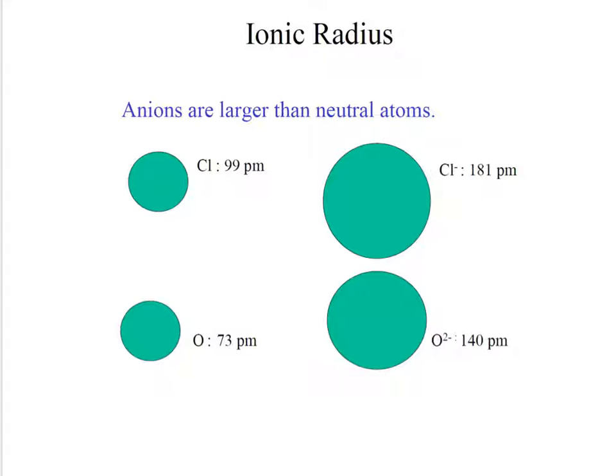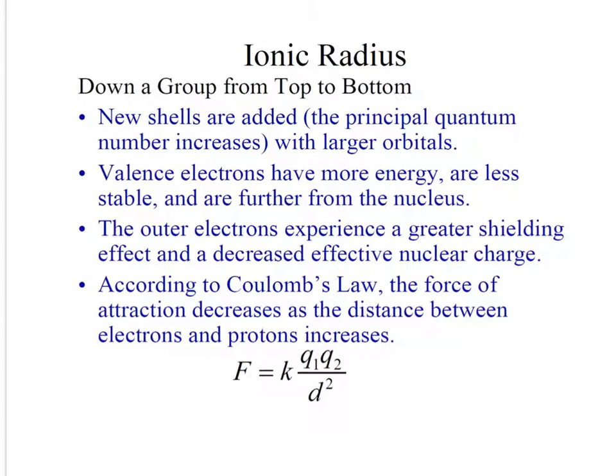When an atom gains electrons, the number of electrons repelling each other increases. This causes them to move further away from the nucleus. In these anions, the radius nearly doubles when electrons are added.